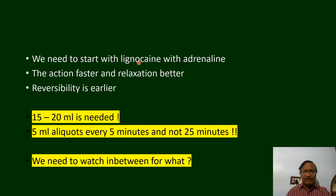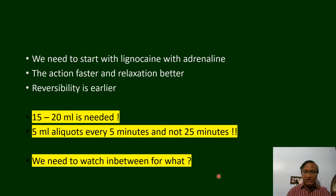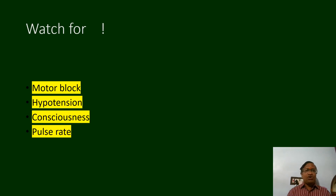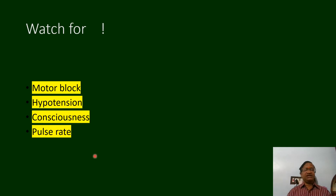To achieve complete block for a total abdominal hysterectomy, start with lignocaine and adrenalin — action is faster and relaxation is better. Give 5 ml every 5 minutes, not 25 minutes; watch in between each increment for motor block, BP fall, consciousness level, and pulse rate for side effects of the epidural.